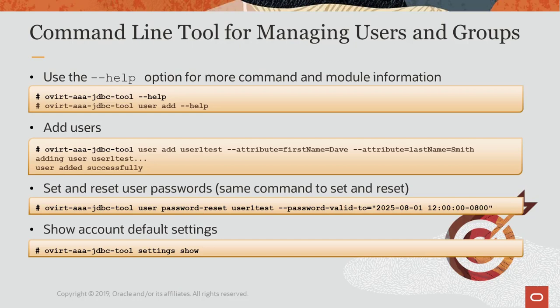Users must be created before they can be added and assigned roles and permissions through the administration portal. The roles and permissions assigned give the user the ability to manage elements of the cloud environment, for example using the VM portal to start creating virtual machines. The permissions can also be associated to users through group accounts. The ovirt-aaa-jdbc-tool command manages user accounts on the internal domain. Changes made with the tool take effect immediately and do not require you to restart the ovirt engine service.